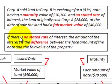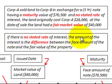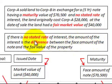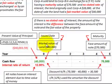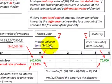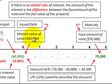In this example, since there's no stated rate of interest, the amount of the interest is the difference between the face amount of the note and the fair value of the property. The fair market value of the land at the issuance date of the note is forty thousand dollars.